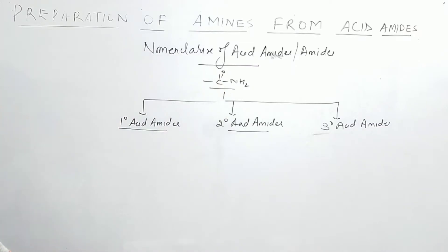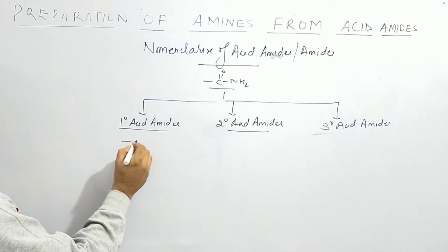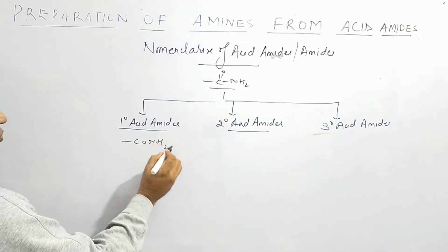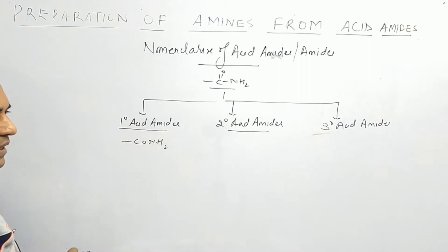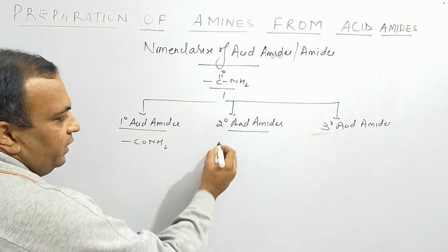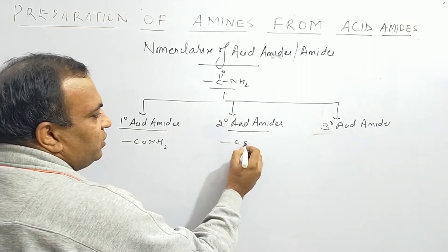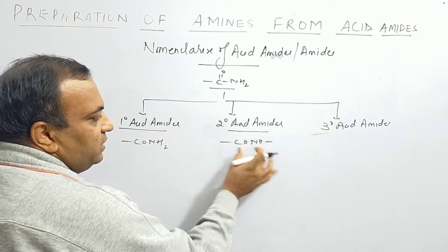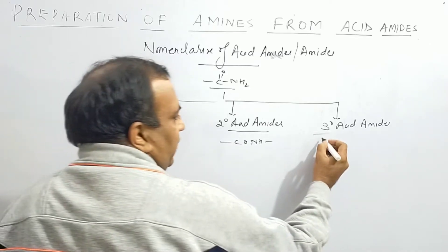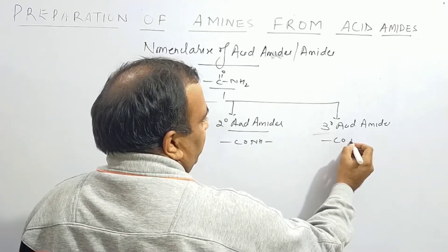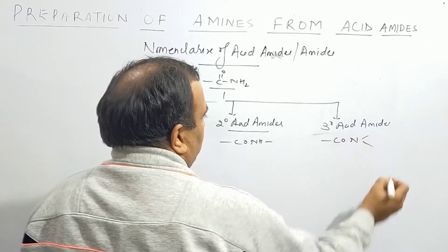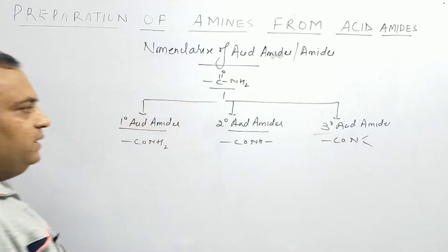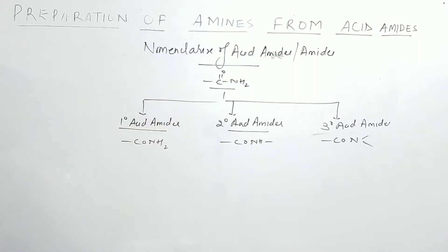Let's distinguish how we identify them. If you have the functional group CoNH2, it means primary acid amide. If you have the functional group CoNH, it means secondary acid amide. And if you have the functional group CoN, it means tertiary acid amide.